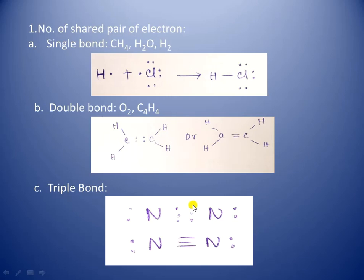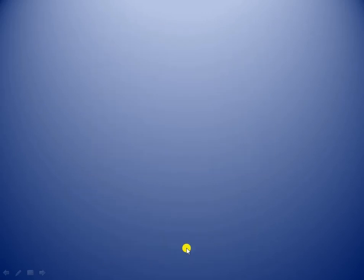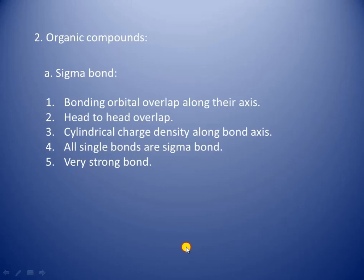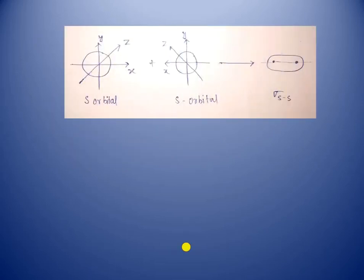On the basis of organic compounds, covalent bonds are of three kinds. First is sigma bond. A sigma bond is formed when bonding orbitals overlap along their axis, that is, head-to-head overlap occurs in sigma bond formation.